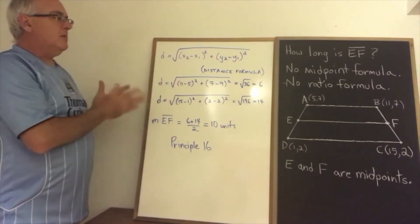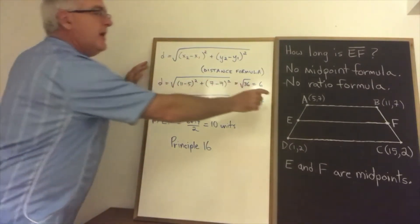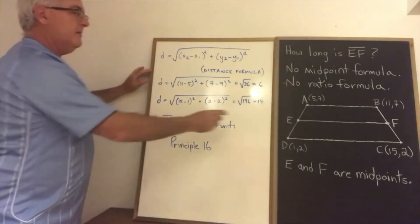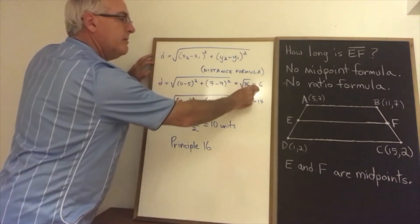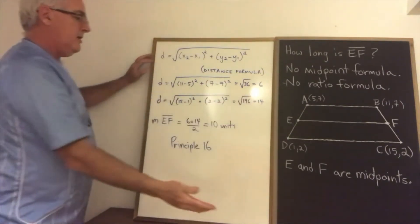The distance formula is being used twice here, for the length of AB and the length of CD. And the length of AB is proven to be 6 units, the length of CD is 14 units.